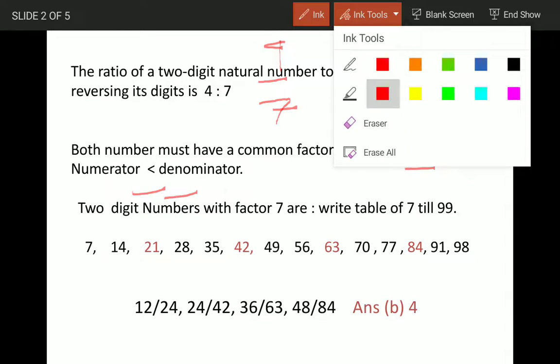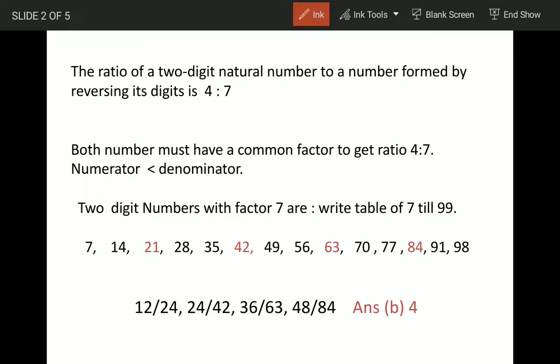We want numbers in the ratio of 4 to 7. What we will do is write numbers which have 7 as one of the factors. We will write these numbers up to 98 because the requirement is to identify two-digit numbers. We have to basically write the table of 7.